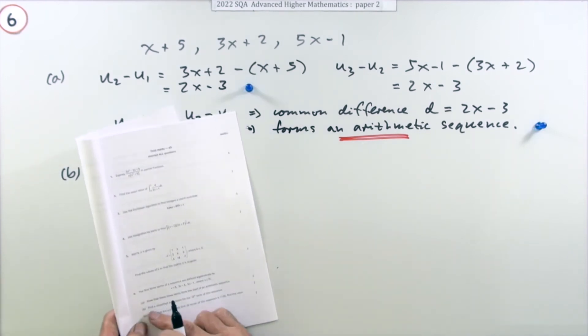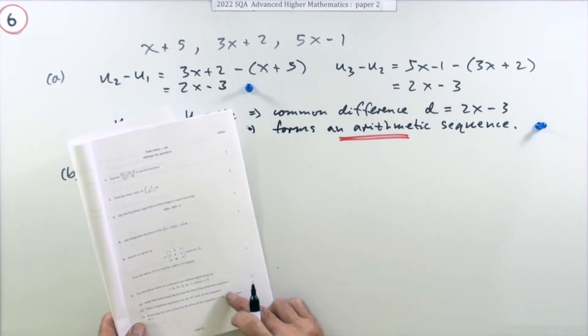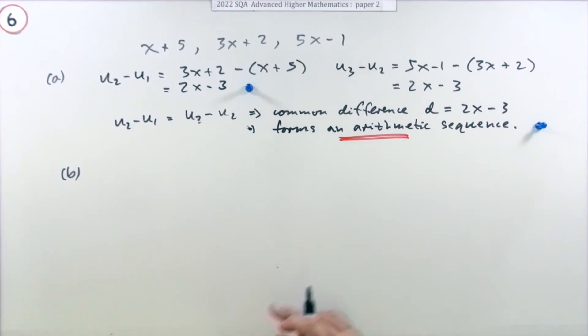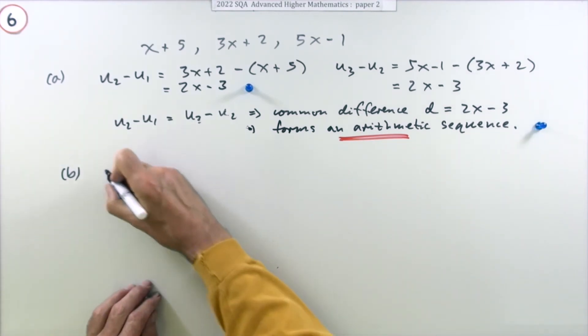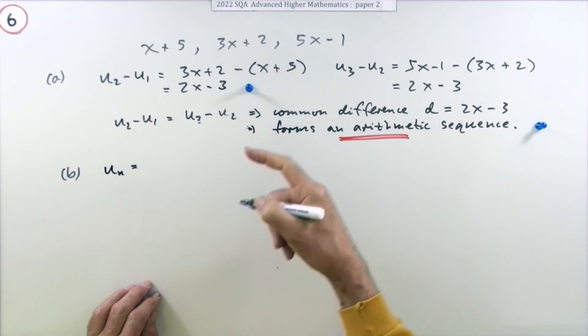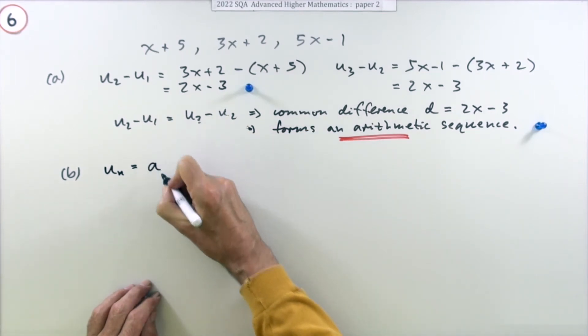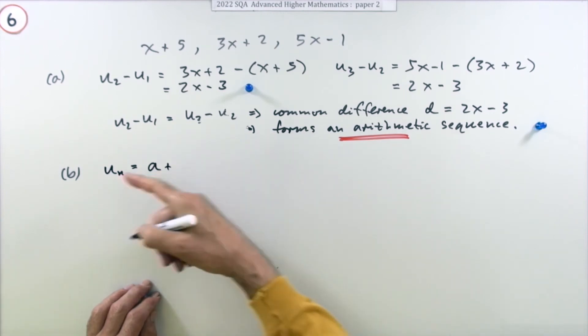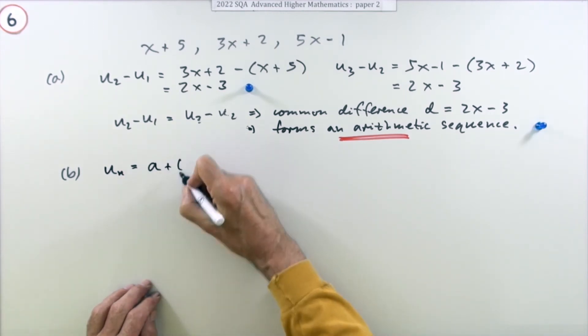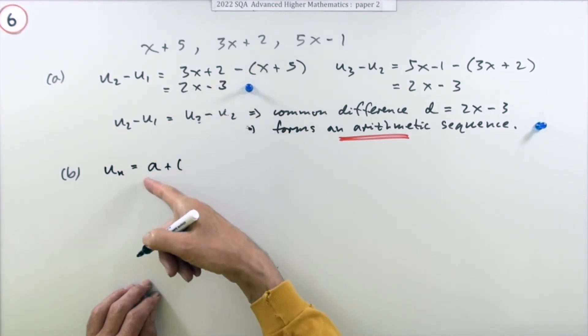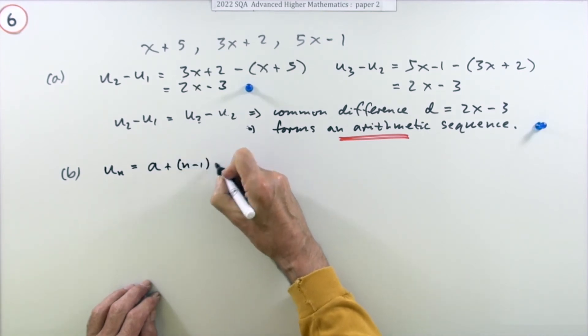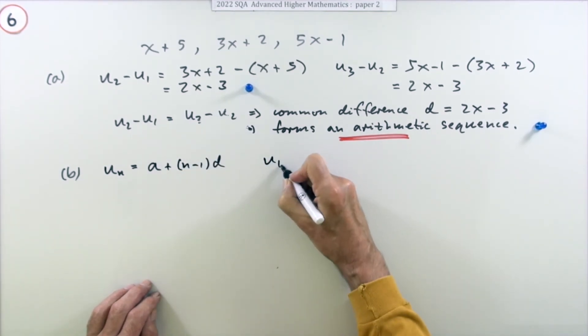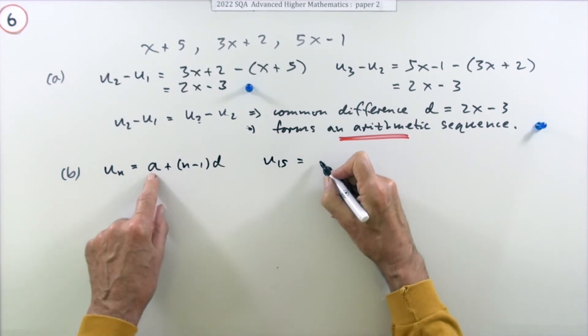Part B: find a simplified expression for the 15th term of this sequence for two marks. Well, that's quite easy. Any particular term in an arithmetic sequence can be found by taking the first term, which you'd call a, and adding on one lot less of whatever the number of terms is, plus n minus 1 times d. So if you're looking for u15, you can just start with the first term and add on one less than the 15, which is 14, of the common difference, which was 2x minus 3.